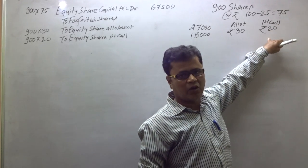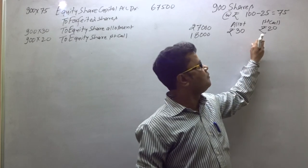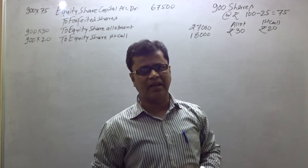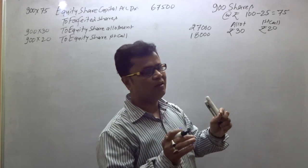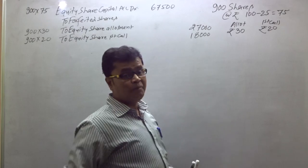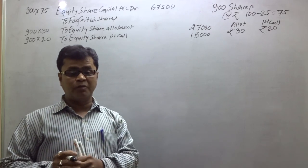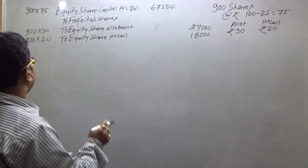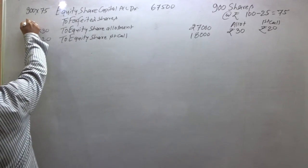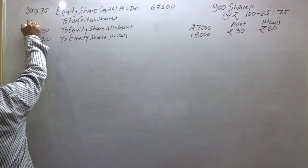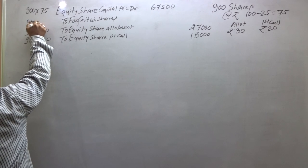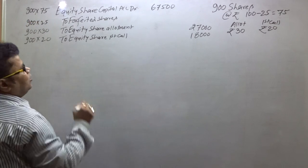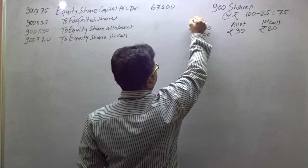₹50 has been paid, and ₹50 payment has not been paid. So the unpaid amount is ₹25. Now 900 into 25 equals ₹22,500. This is the amount credited to forfeited shares account.